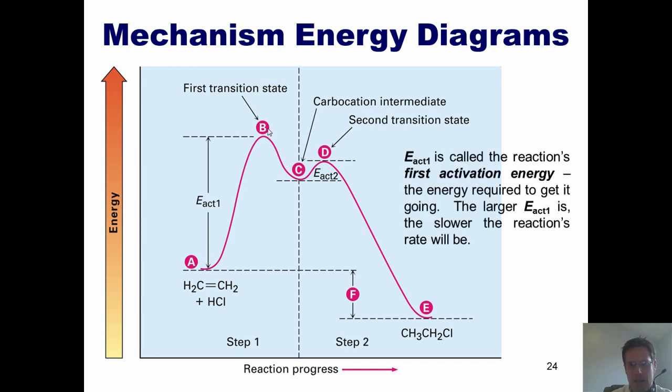I want to point out one thing here. This thing right here, the difference in energy between A and B, the bottom of the hill and the top of the hill, is called the reaction's first activation energy, which is the energy required to get the reaction going. The larger the reaction energy is, the slower the reaction's rate will be.